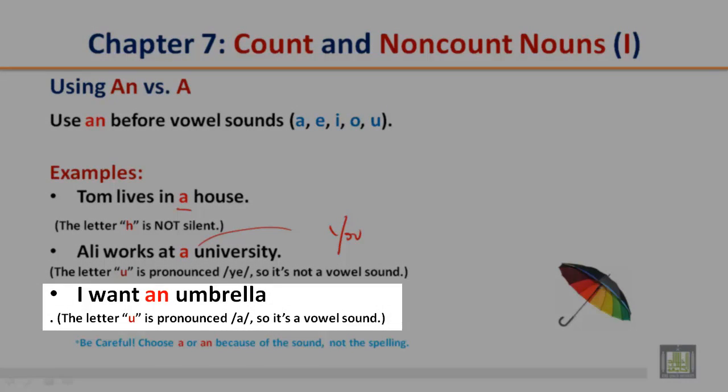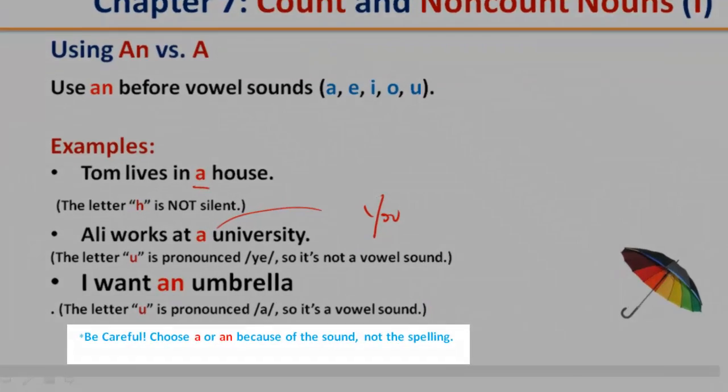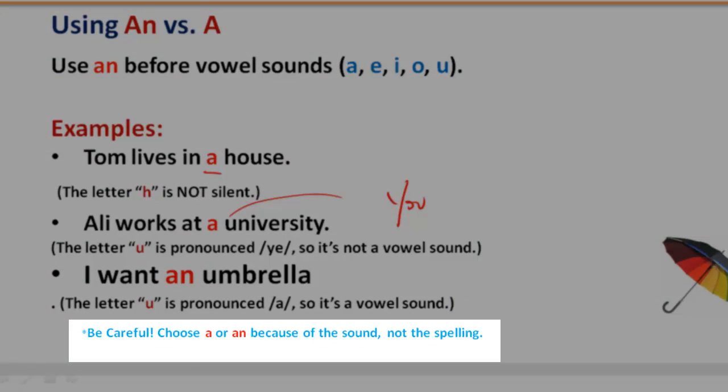I want an umbrella. The letter U is pronounced uh, so it is a vowel sound. It comes from your throat. Be careful. Choose a or an because of the sound, not the spelling.